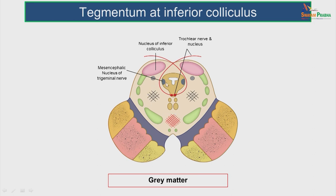Now let us study the structures at the tegmentum. There are two levels: at the inferior colliculus and at the superior colliculus. At the inferior colliculus level, in the periaqueductal gray matter, anteriorly you can see the nucleus of the trochlear nerve. On the lateral aspect is the mesencephalic nucleus of the trigeminal nerve, which carries proprioceptive sensation. The trochlear nerve is the only cranial nerve that crosses over and comes from the dorsal aspect — all other cranial nerves are ipsilateral, only this is contralateral. We can also appreciate the nucleus of the inferior colliculus, which is involved in the auditory pathway.